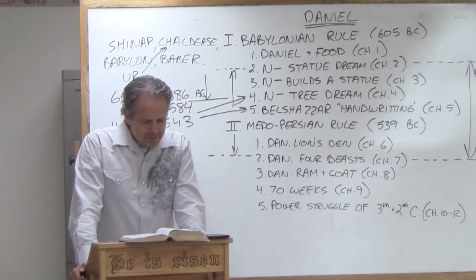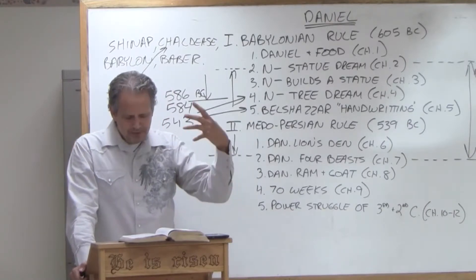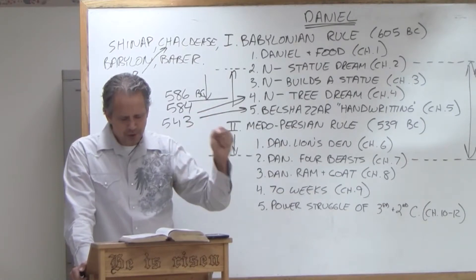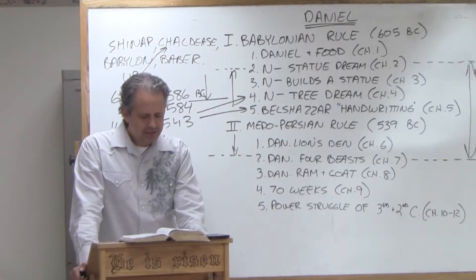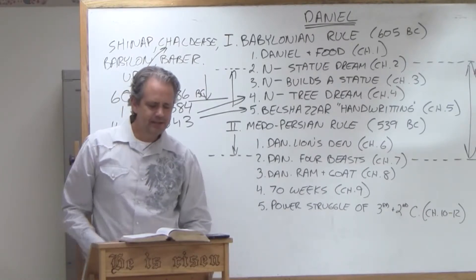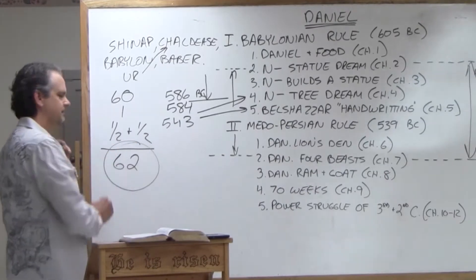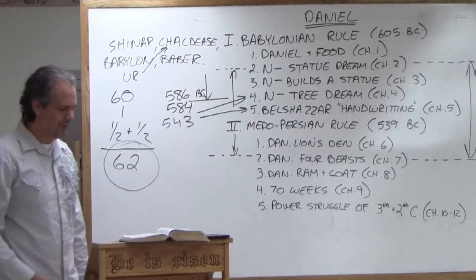That very night, so one of the other things we know that puts us after 543, because that was when Nabonidus returns back to Babylon. That very night, Belshazzar the Chaldean was killed. Darius the Mede received the kingdom, and how old was he? Yeah. And that's the number that came up on the wall there.